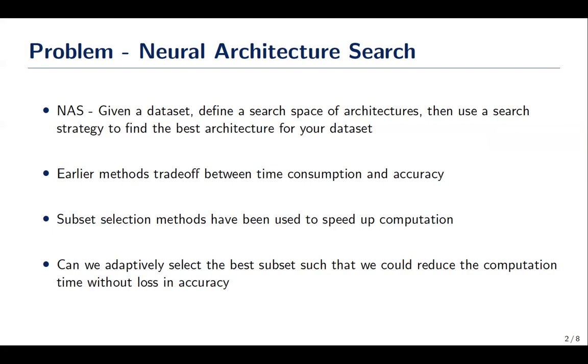Recently, finding a representative subset to train has shown to reduce the training time to find the best architecture. These subsets are not adaptive. We in this work adaptively find subsets as training progresses, based on the current parameters, we select the subset of the data.